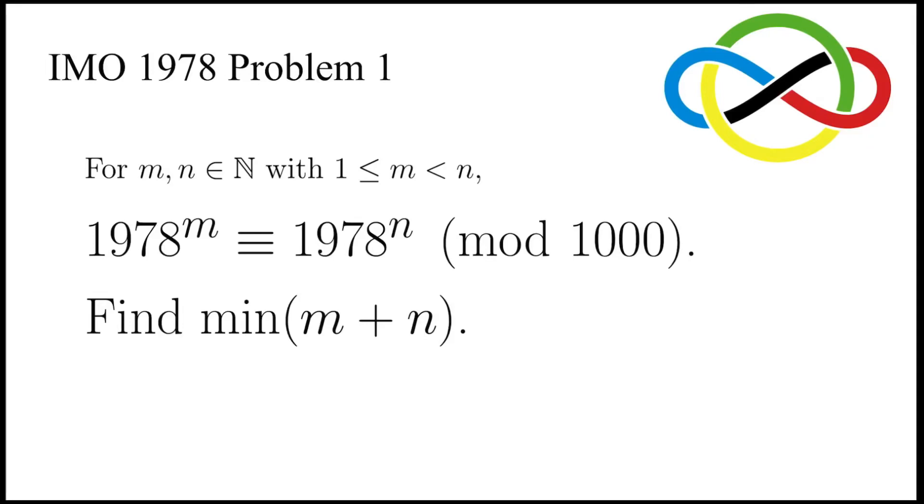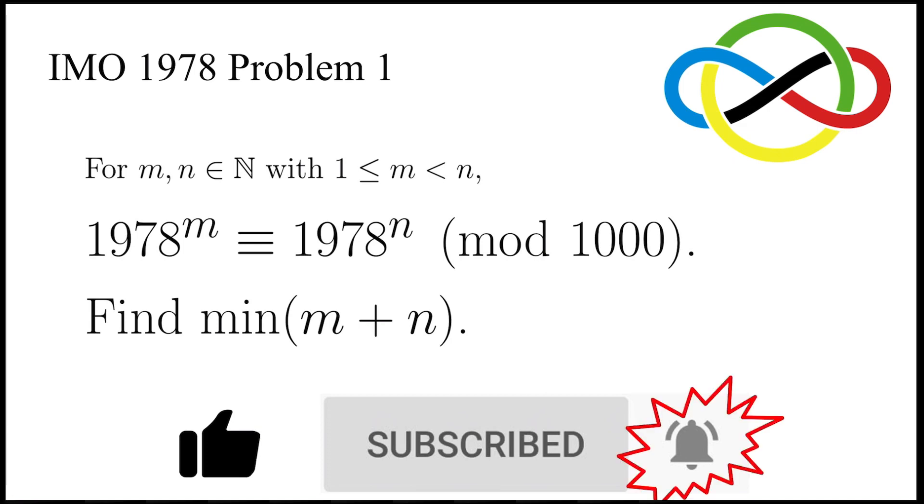In this video, we are going to solve the first problem in IMO 1978. We have natural numbers m and n, where n is larger than m, and 1978 to the power of these two numbers are congruent to each other mod 1000, which means they have the same ending three digits. The problem is to find the minimum value of m plus n. Before we move on, don't forget to give a like, subscribe to my channel, and turn on post notifications.